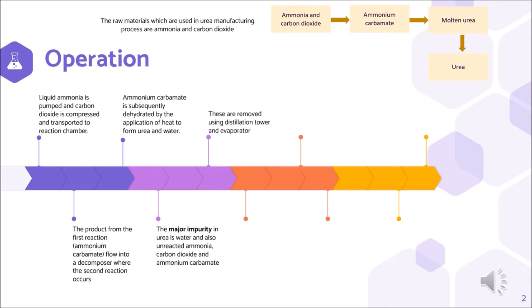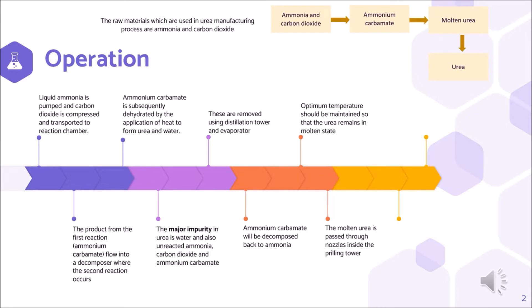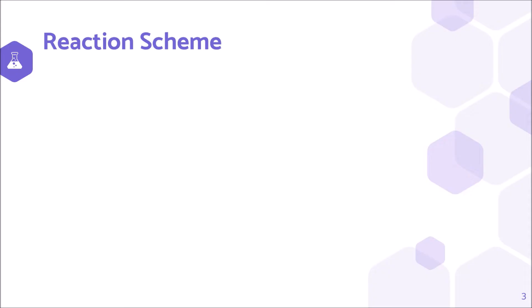These impurities are removed using a distillation tower and evaporator. Ammonium carbamate will be decomposed back to ammonia. Optimum temperature should be maintained so that the urea remains in molten state. The molten urea is passed through nozzles inside the prilling tower, where it gets solidified, and air helps in shaping it in the form of prills or granules. Urea is then stored.